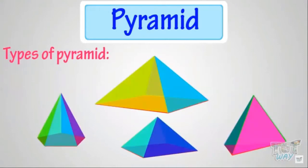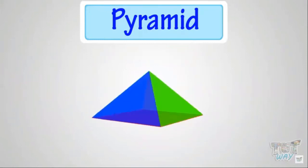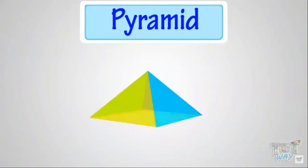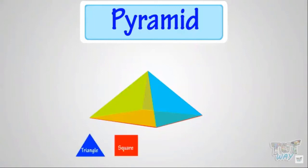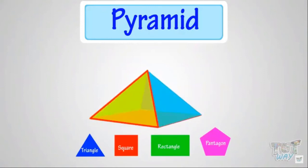First, let's see what a pyramid is. In simplest words: a pyramid is a 3D shape where it has a single base, which can be of any polygon shape like triangle, square, rectangle, or pentagon, and all other faces are triangular in shape and converge to a single point at the top, which is called its apex.